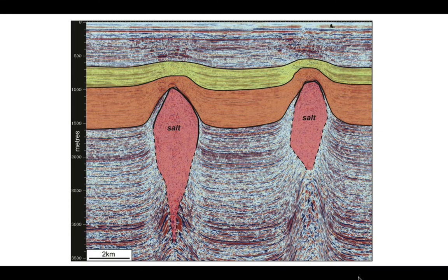Classic growth strata. We can see within the orange package the internal reflectivity onlaps the salt body — or actually, if you look closely, it's not the salt body it's onlapping; it's a package of reflections lying between the salt and the orange unit.